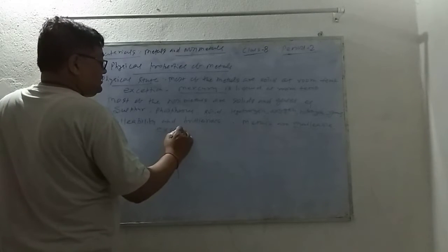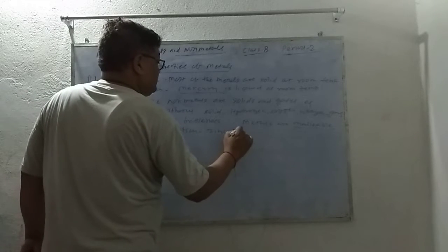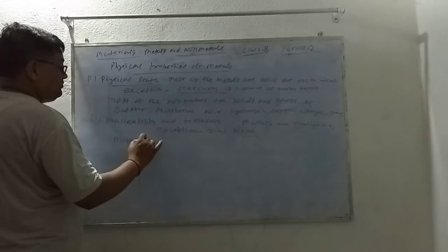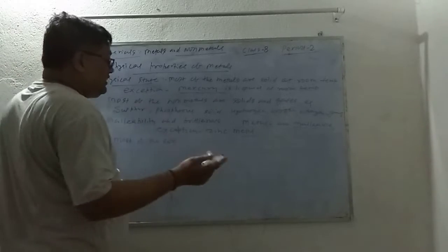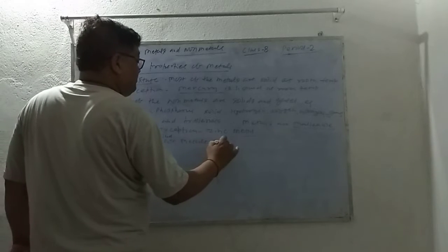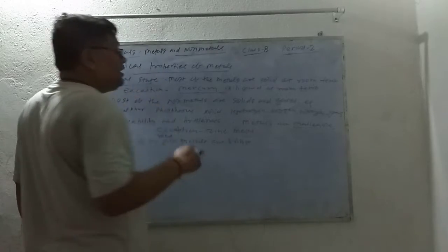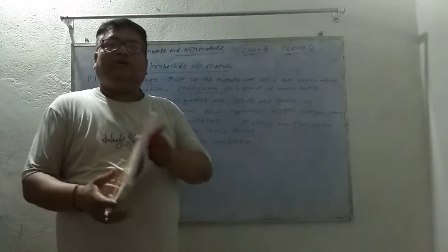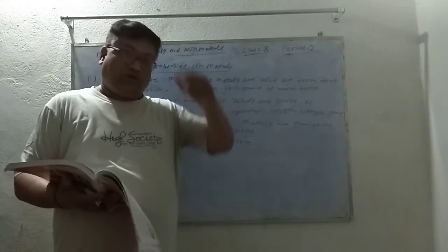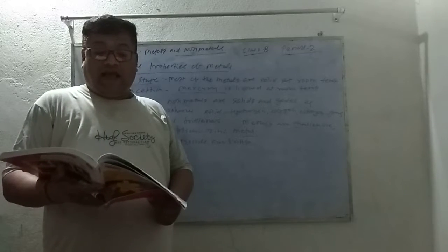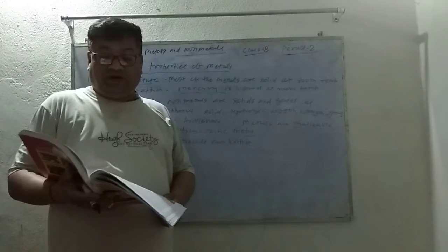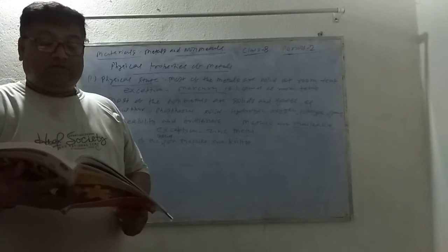Most of the solid non-metals are brittle. Brittle means that when you hit it, it will fall apart and will not be formed into a new shape. Brittleness is a property due to which non-metals in solid state break up into pieces on hammering. For example, sulfur and coke break up into small pieces on hammering.